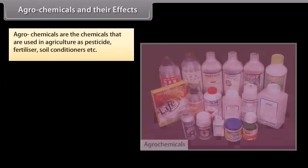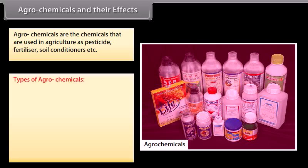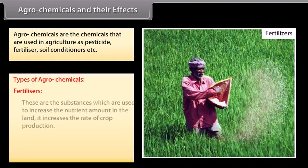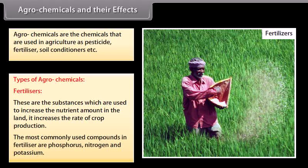Agrochemicals are chemicals that are used in agriculture as pesticides, fertilizers, soil conditioners, etc. Types of agrochemicals — Fertilizers: these are substances used to increase the nutrient amount in the land, increasing the rate of crop production. The most commonly used compounds in fertilizers are phosphorus, nitrogen, and potassium.